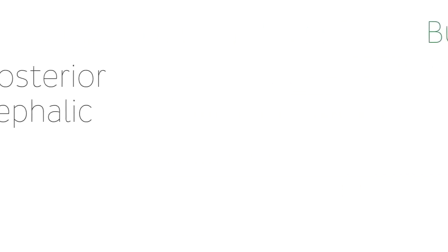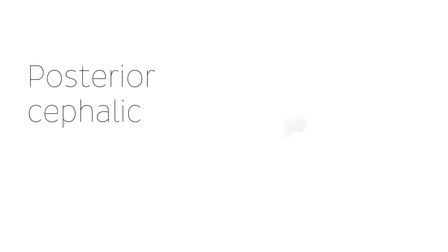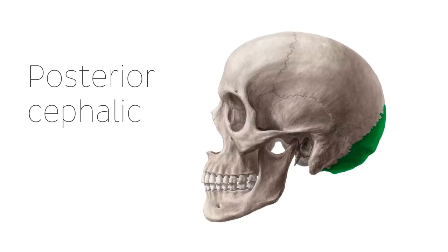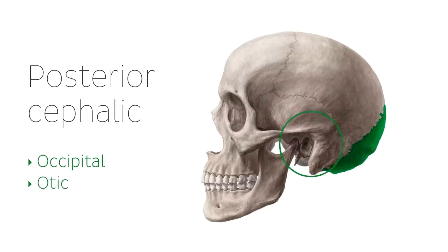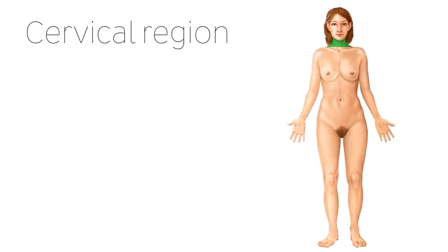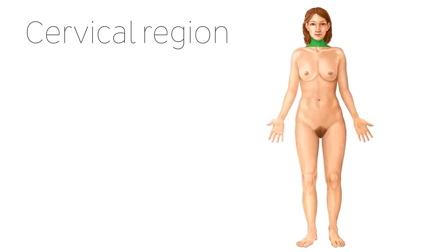On the posterior aspect of the cephalic region there are some other regions. The occipital region, which includes the occipital bone of the skull, highlighted in green. And the otic region, referring to the area around the ears. The cervical region, in the area of the cervical vertebrae, refers to the neck.